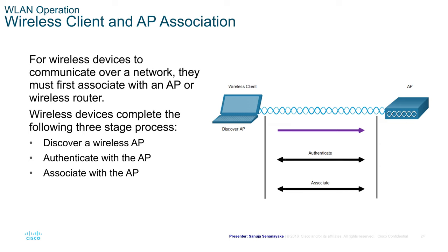Wireless Client and Access Point Association. For wireless devices to communicate over a network, they must first associate with an AP or wireless router. The wireless devices complete a three-stage process: discover a wireless AP, authenticate with the wireless AP, and associate with the wireless AP.